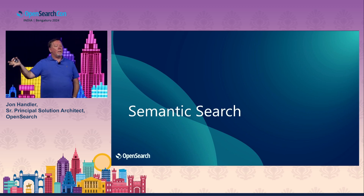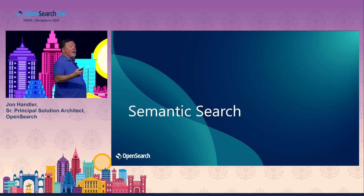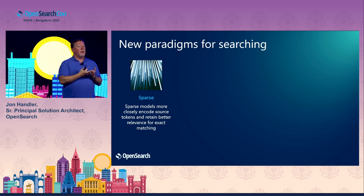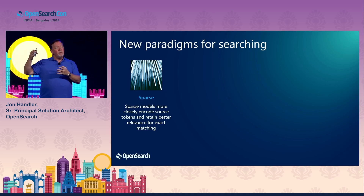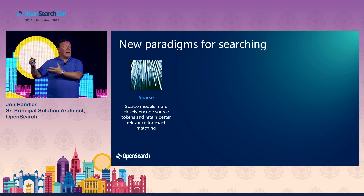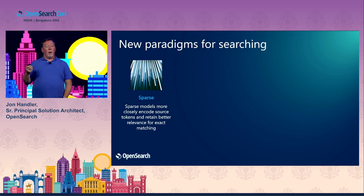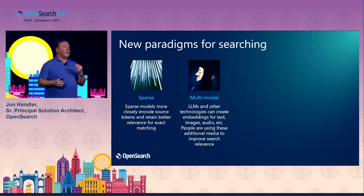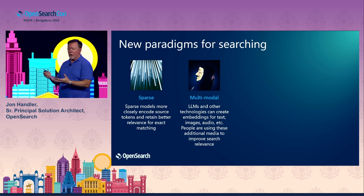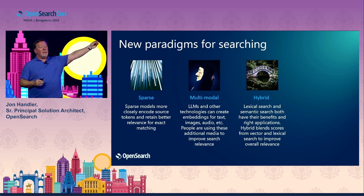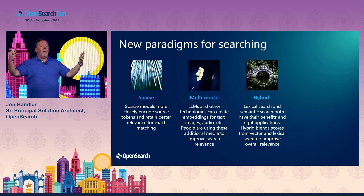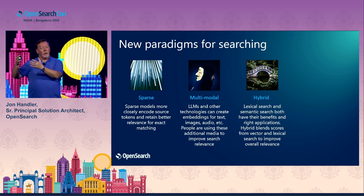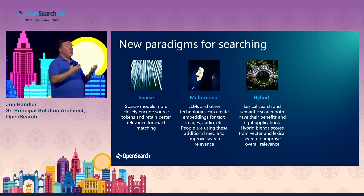Let's talk about how we use vectors in search. Sparse search brings a union of the generalization of dense vectors along with some of the precision of lexical token-to-token matching, so sparse models provide a benefit over just dense models for search. Multimodal broadens the window for specifying an information goal. Hybrid brings a lexical match and a vector match, combining the scores for best of both worlds — a lexical score and a vector score. OpenSearch can combine those to give you the best of both worlds.